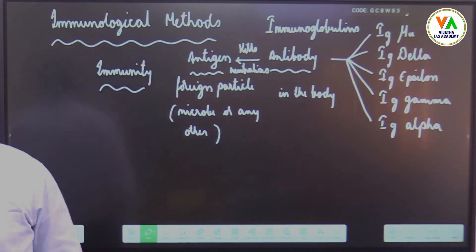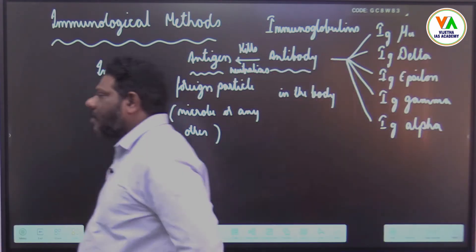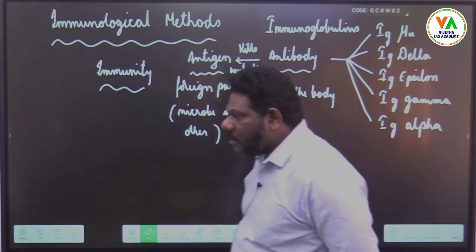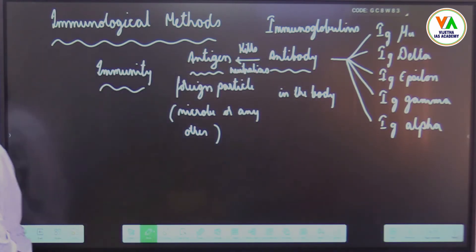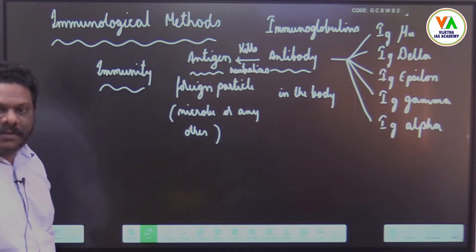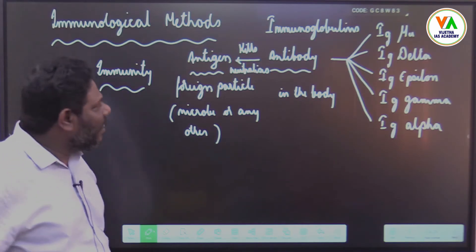Please write: immunity is nothing but the body's response towards an antigen. Antigen is any foreign particle or microorganism in the body. Antibodies produced by the body kill or neutralize the antigen. Antibodies are also known as immunoglobulins.